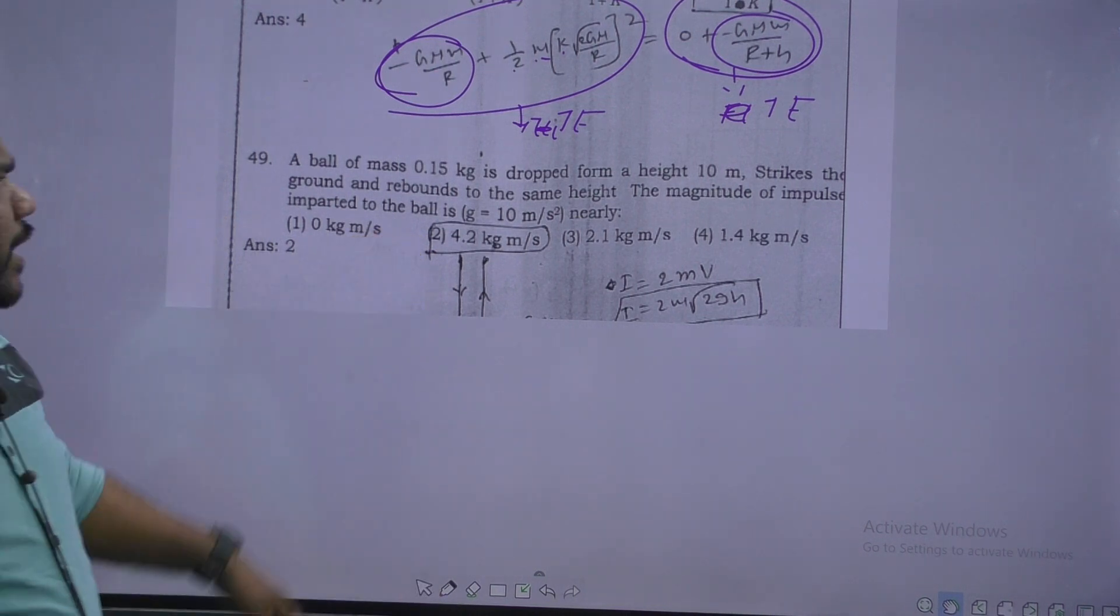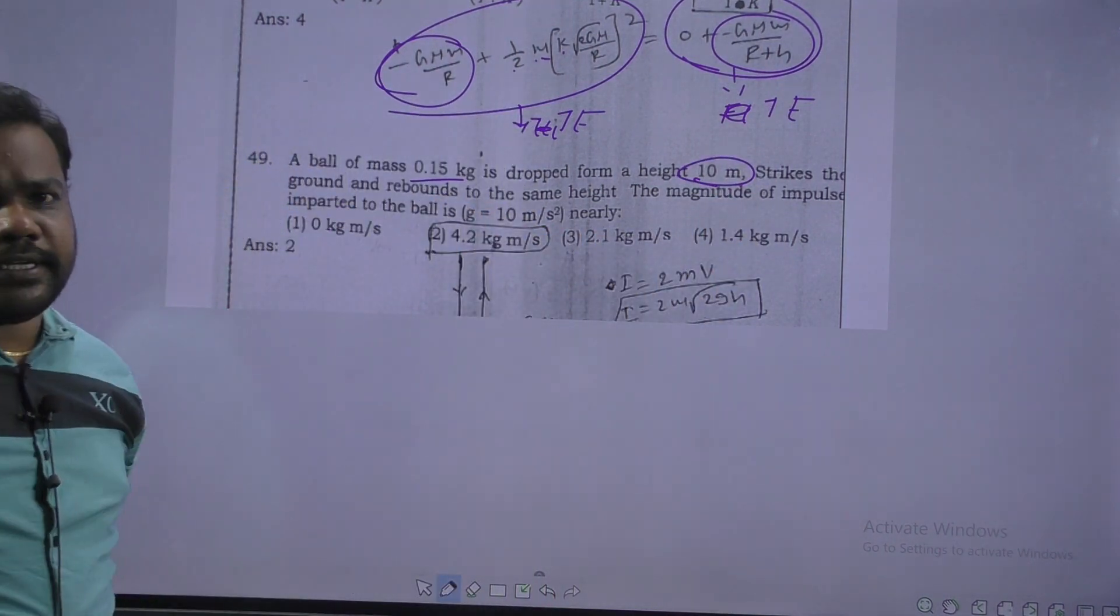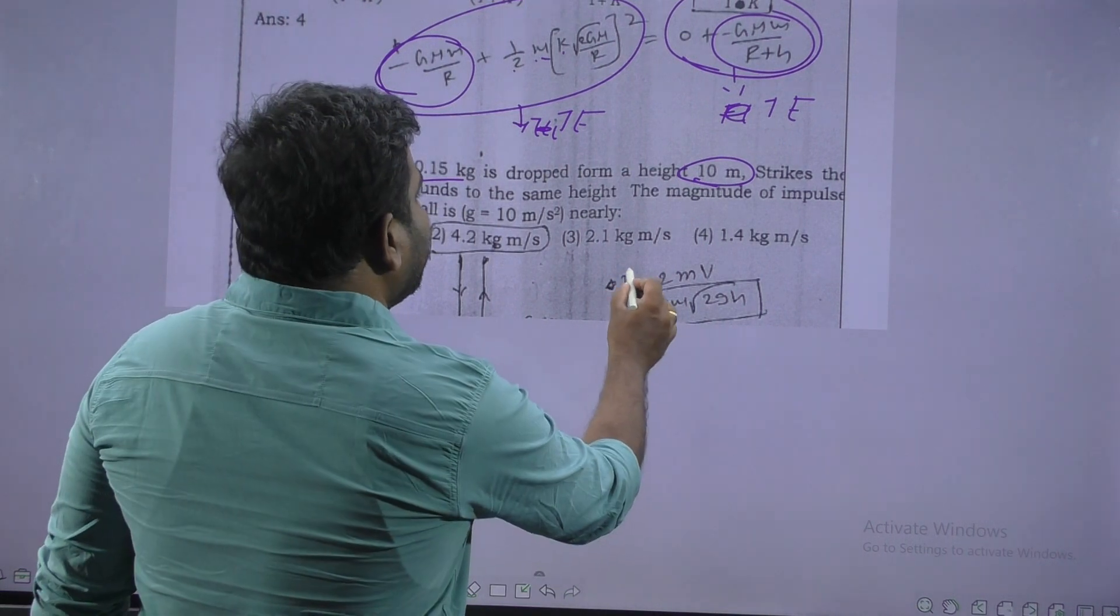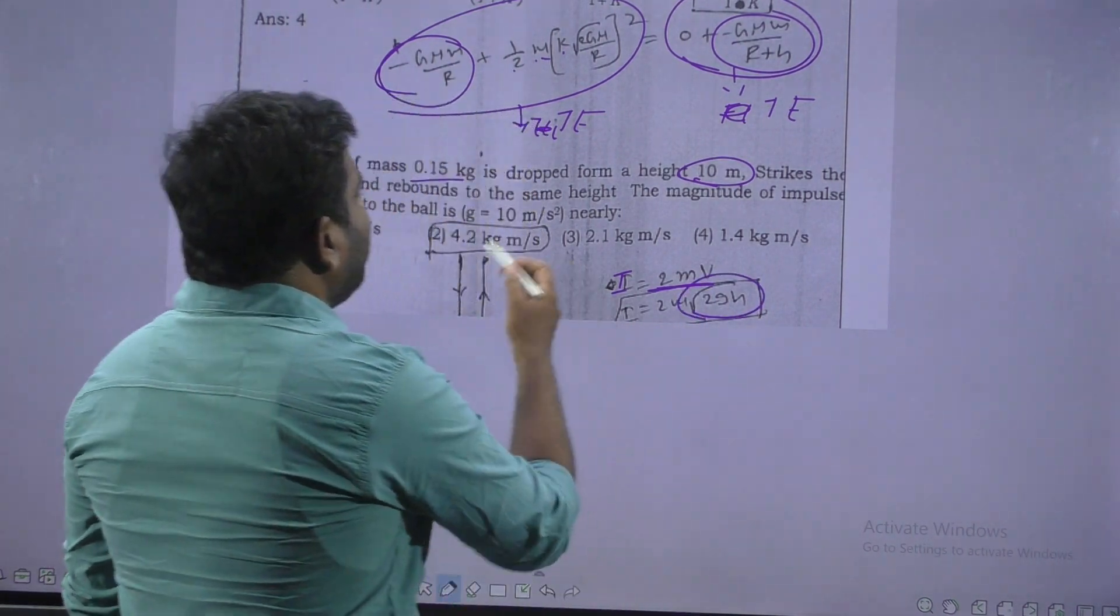Next. After this one impulse is asked. It is dropped from height 10 meters of mass 0.1 kg. It reached to the same height. That means final momentum minus initial momentum is going to be impulse. Impulse is equal 2 times of momentum. But V is we know root 2 gh.